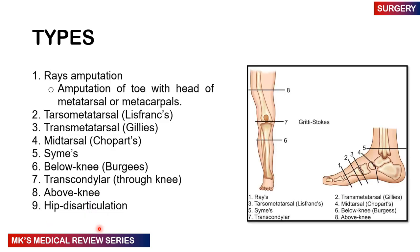Looking at the types of amputations with this picture: there is a ray amputation, a transmetatarsal amputation, and a Syme's amputation at level 5 — though Syme's is generally unstable and most surgeons don't prefer it. The transmetatarsal is also considered quite unstable. Then there is a mid-tarsal amputation, below-knee, transcondylar which is through-knee, above-knee, and hip disarticulation where the entire lower limb is removed.